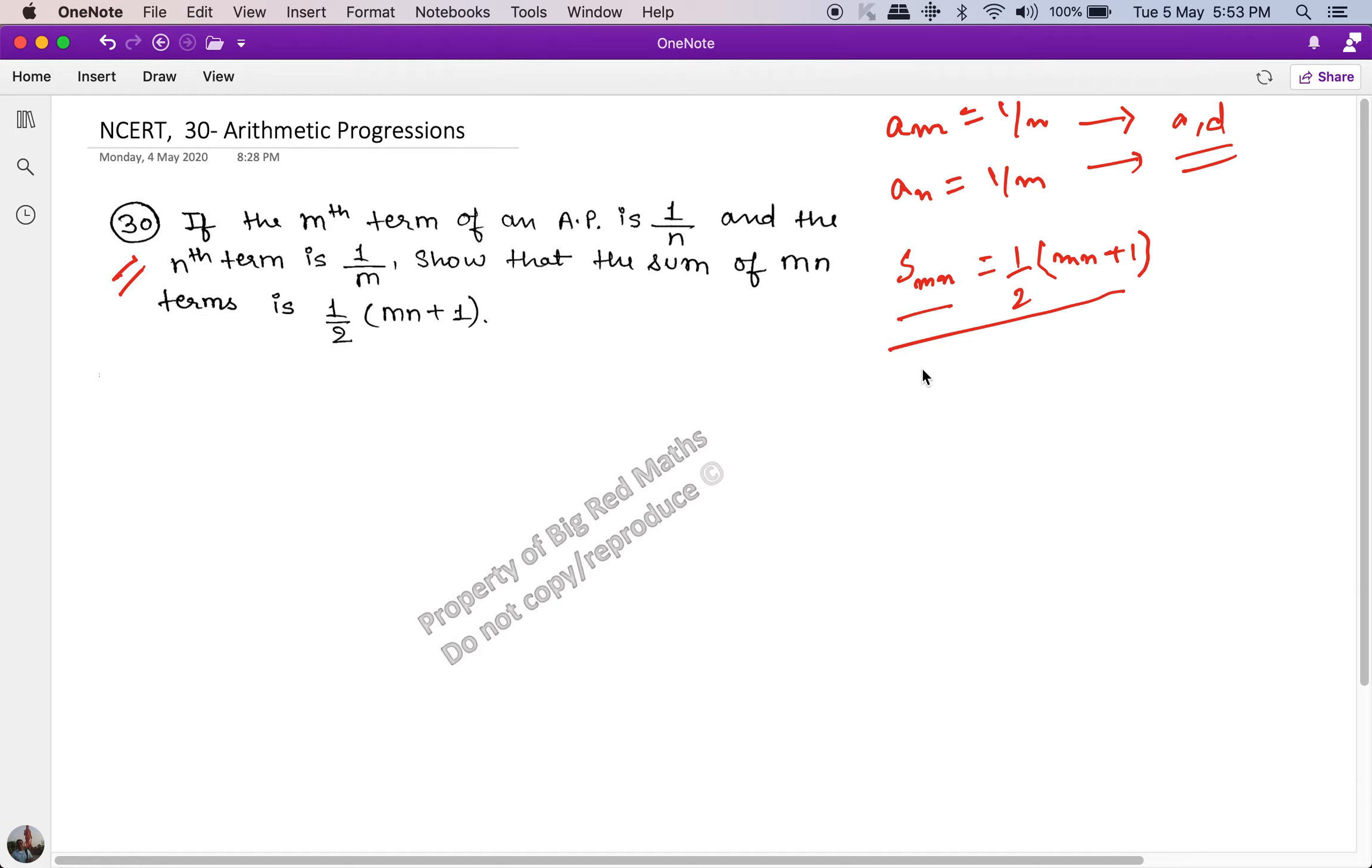We put that value in the formula for s of n. So s of n formula is n upon 2 into 2a plus (n minus 1) into d. You have to populate this formula using the values of a and d that we get via these two conditions.